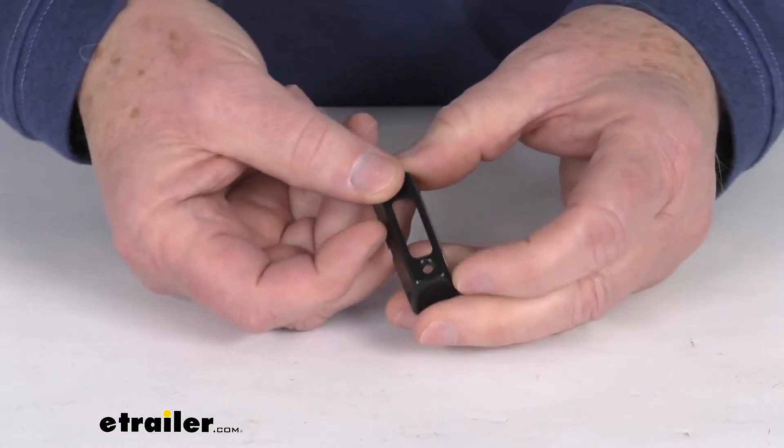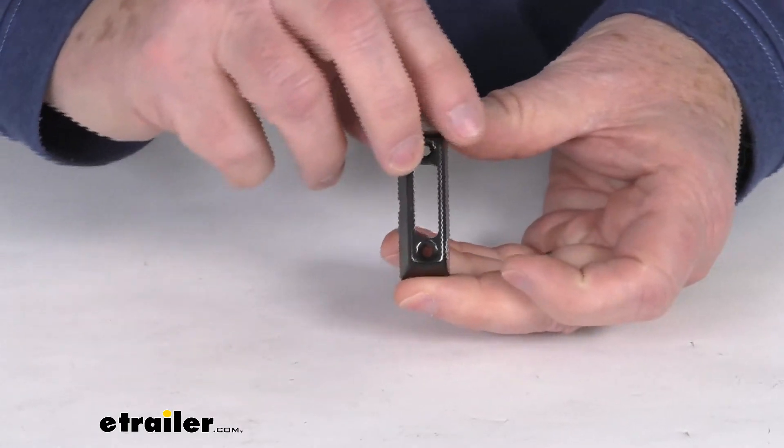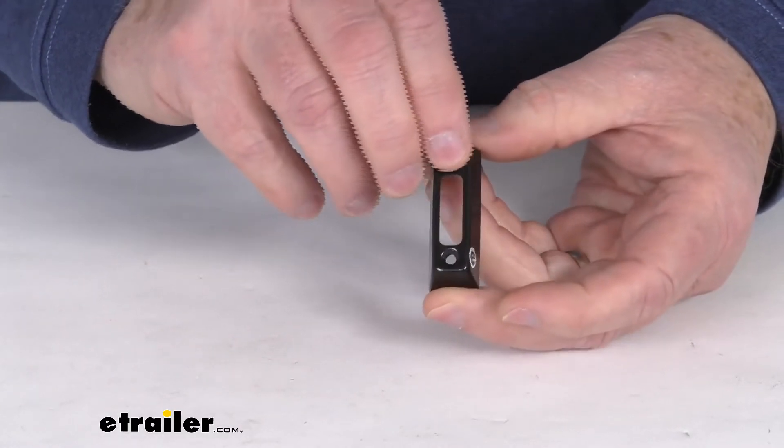But that should do it for the review on this black vertical mounting cover for the TecNiq Mini LED Accent Light.